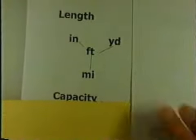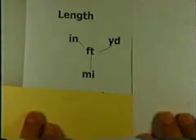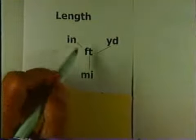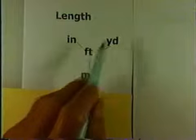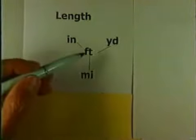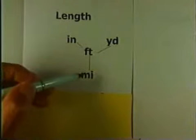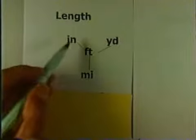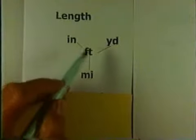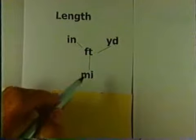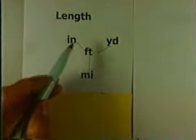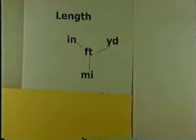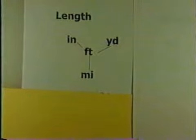Let's first look at the route for length. I have a conversion fact between inches and feet: 12 inches is 1 foot. I have a conversion fact between feet and yards: 3 feet is 1 yard. I have a conversion fact between feet and miles: 1 mile is 5,280 feet. So I can go from inches to feet, feet to inches, yards to feet, feet to yards, feet to miles, miles to feet. I have no conversion fact between inches and miles, so if I'm trying to convert inches to miles, I have to go from inches to feet and then to miles. Likewise, if I'm converting miles to yards, I go from miles to feet and then to yards — I'll need a third factor.